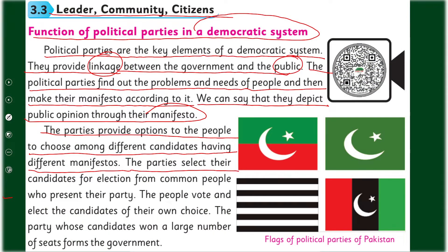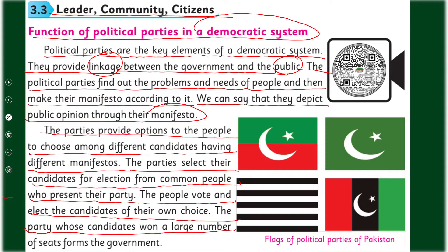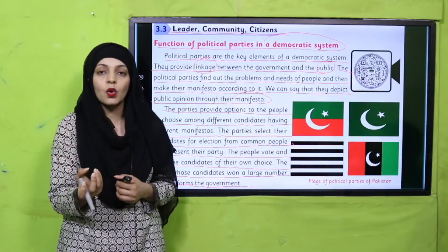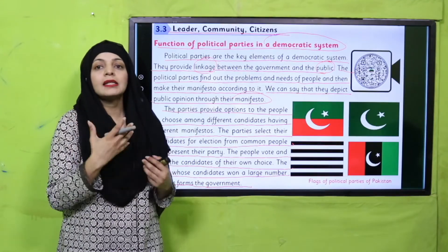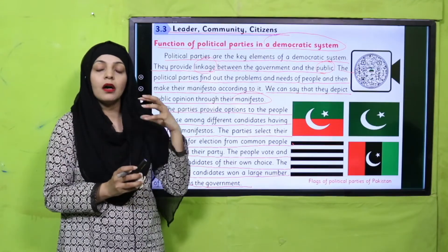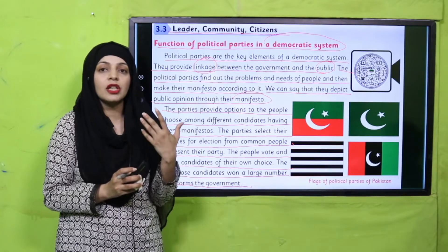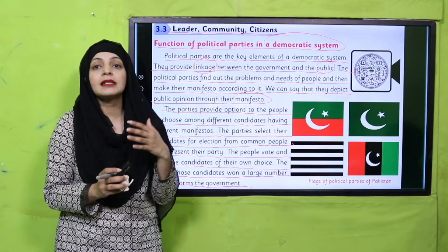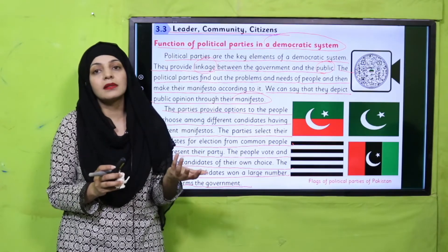The parties provide options to the people to choose among different candidates having different manifestos. The parties select their candidates for elections from common people who represent their party. The people vote and elect the candidates of their own choice. The party whose candidates win a large number of seats forms the government. Jitni bhi parties hain, wo apne candidates ko mukhtalif jagahon se khada karti hain, aur log apni pasand ke candidate ko select karte hain.